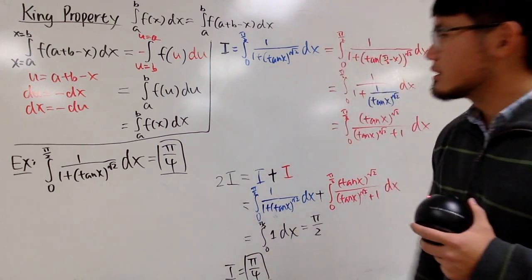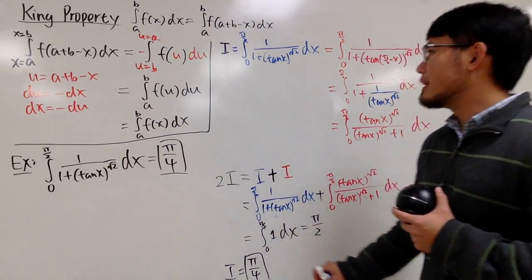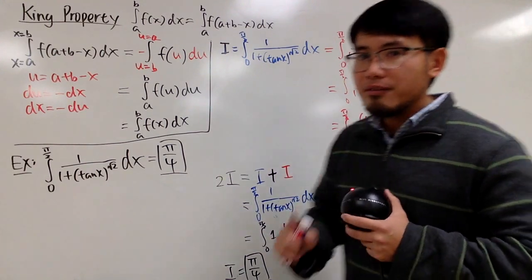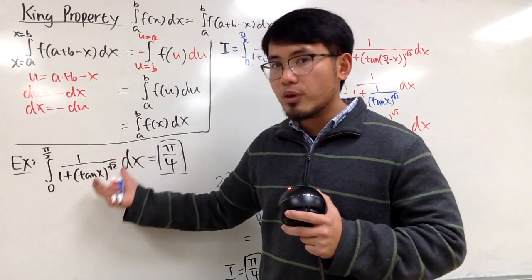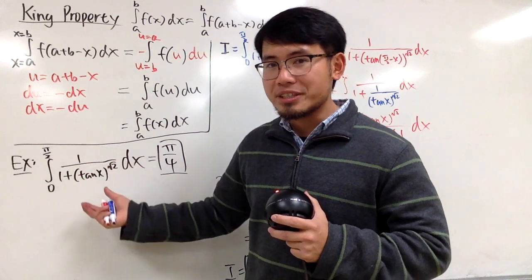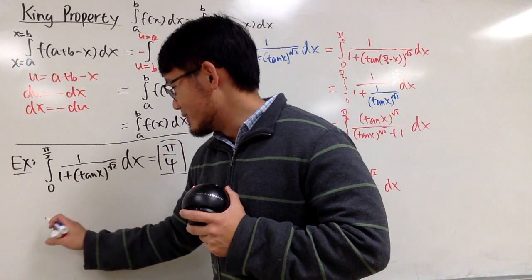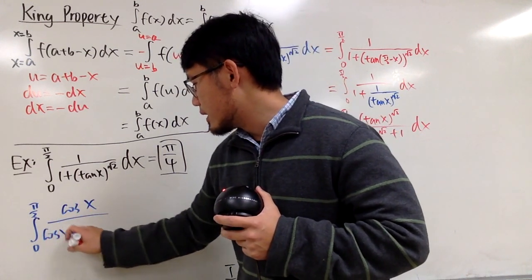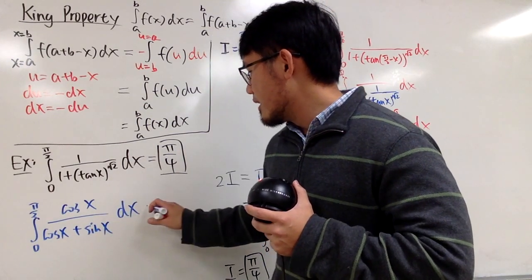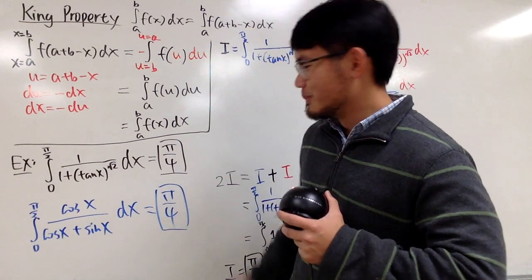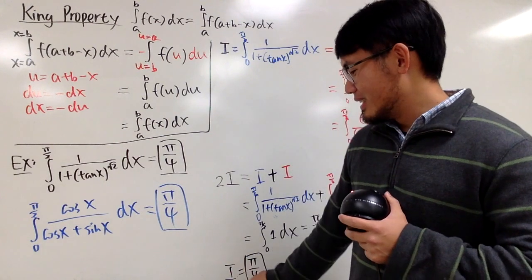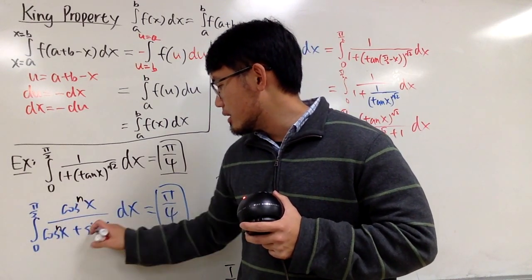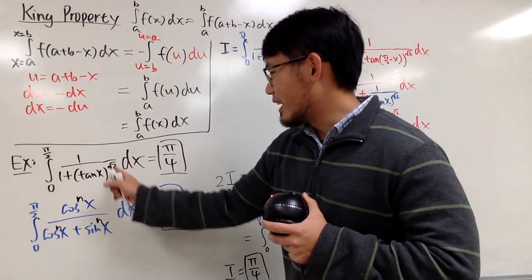Very nice — and that confirms the answer is π/4. You can see that the square root of 2 power doesn't matter at all; you can put whatever you want. If you write tangent as sin x over cos x and multiply top and bottom by cos x to the square root of 2 power, you get the famous form: the integral from 0 to π/2 of cos x over (cos x plus sin x) dx, which also gives π/4. In general you can put any power n, and the square root of 2 case is just n equals √2.